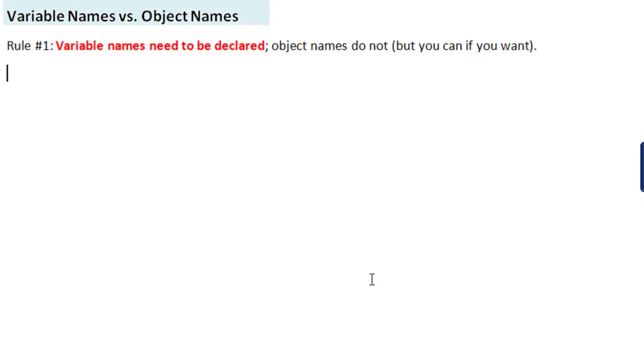In this video, we're going to discuss the difference between variable names and object names. Rule number one: variable names need to be declared. Object names do not, but you can if you want. The first thing is to define what name means.